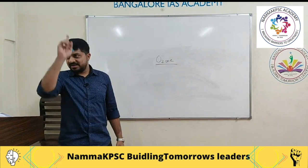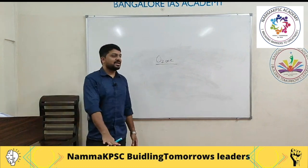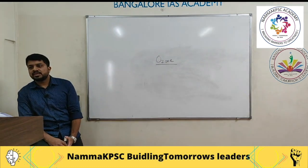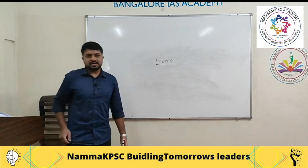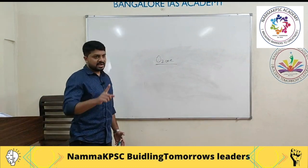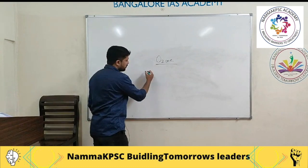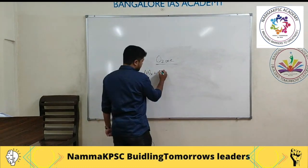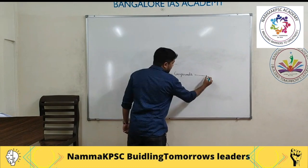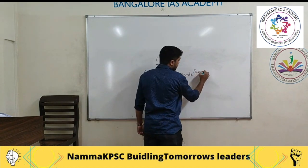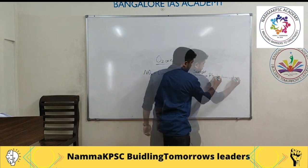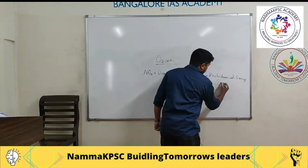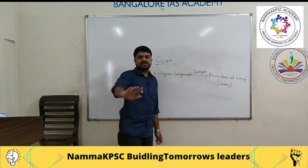The same ozone that is our friend in the stratosphere becomes a pollutant if present at ground level. Now, how is ground-level ozone formed? Oxides of nitrogen react with organic compounds in the presence of sunlight to produce photochemical smog, which also contains ozone among other things.